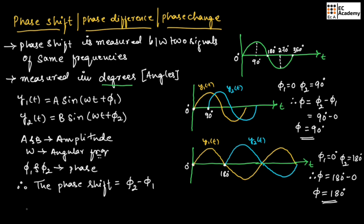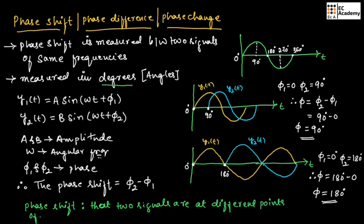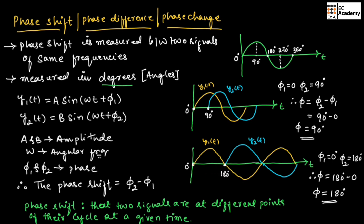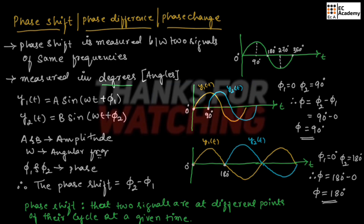From this we understood that phase shift means two signals are at different points of their cycle at a given time. This is about phase shift between two signals. Hope you have understood the topic. Thank you.